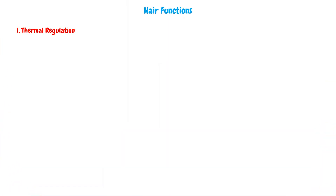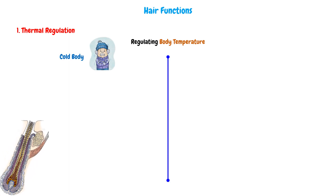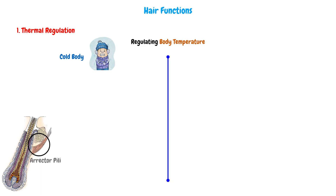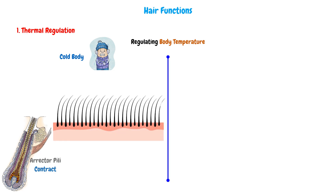Firstly, the thermal regulation. The hair helps in regulating body temperature. So if the body was cold, the erector pili muscle which is attached to the hair follicle will contract, so the hair will stand up. As a result, the hair in this region will erect, which will insulate heat by making a heated rubbing layer above the epidermis, so the body becomes warmer because of this layer.